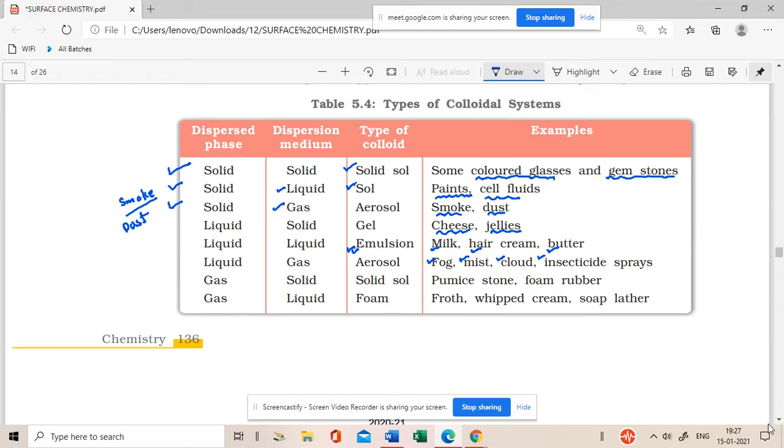Now, a gas is dispersed in a solid. Gas is in the solid in colloidal particle form - pumice stone, the stone that people use to smoothen the heels, foam rubber. Then we have a gas in a liquid which is known as a foam. So the coffee froth that you get is a gas dispersed in a liquid, the whipped cream that you get for your cakes, soap lather.